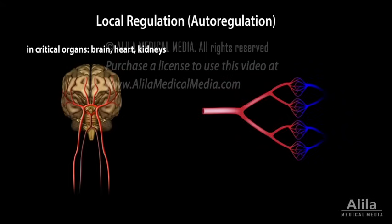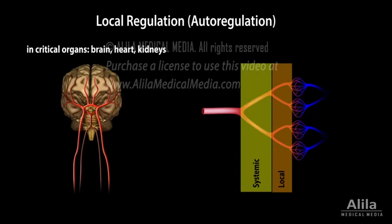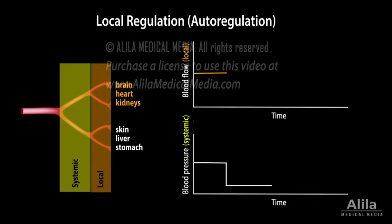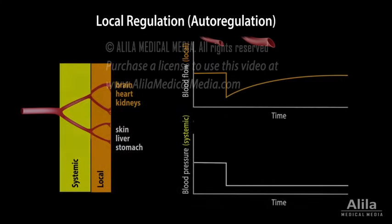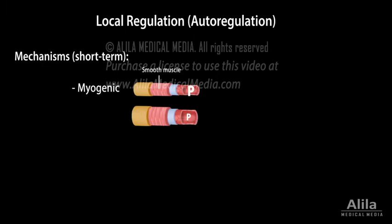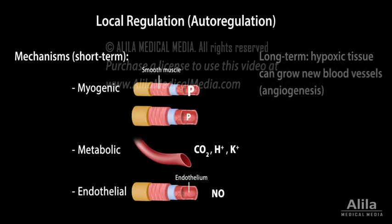Local regulation, or autoregulation, is the ability of some critical organs to maintain constant blood flow, hence perfusion, despite changes in systemic arterial pressure. For example, when arterial pressure decreases, baroreflex constricts much of the systemic vasculature, but blood flow to the brain remains largely unaffected. This is because the initial decrease in flow will cause small arteries and arterioles in the brain to dilate, quickly returning the flow to normal. Autoregulation is based on the ability of vascular smooth muscle and small arteries to constrict or dilate in direct response to changes in blood pressure, the ability of tissues with high metabolic rates to release vasodilators increasing blood flow, and the ability of endothelial cells to release vasoactive factors in response to changes in flow velocity or shear stress. In the long term, a hypoxic tissue can grow new blood vessels to increase perfusion.